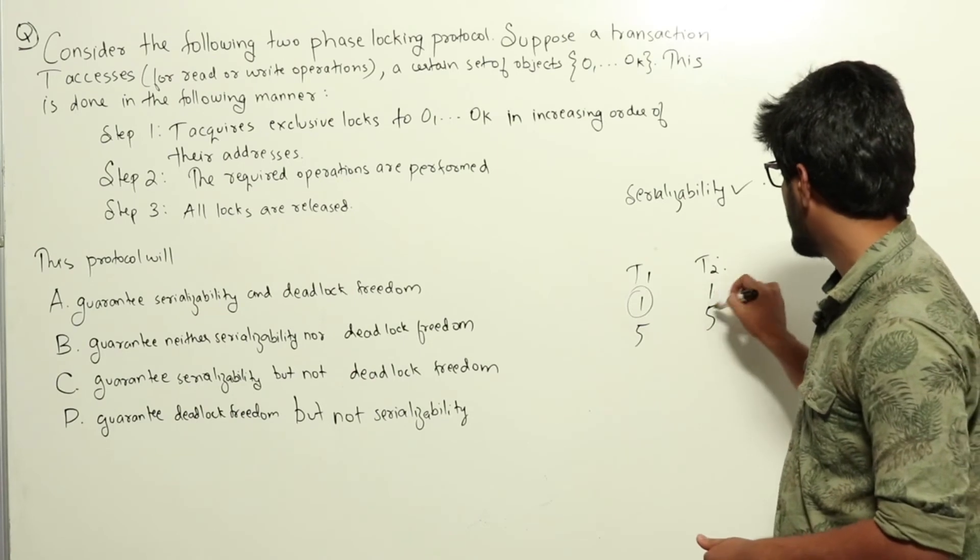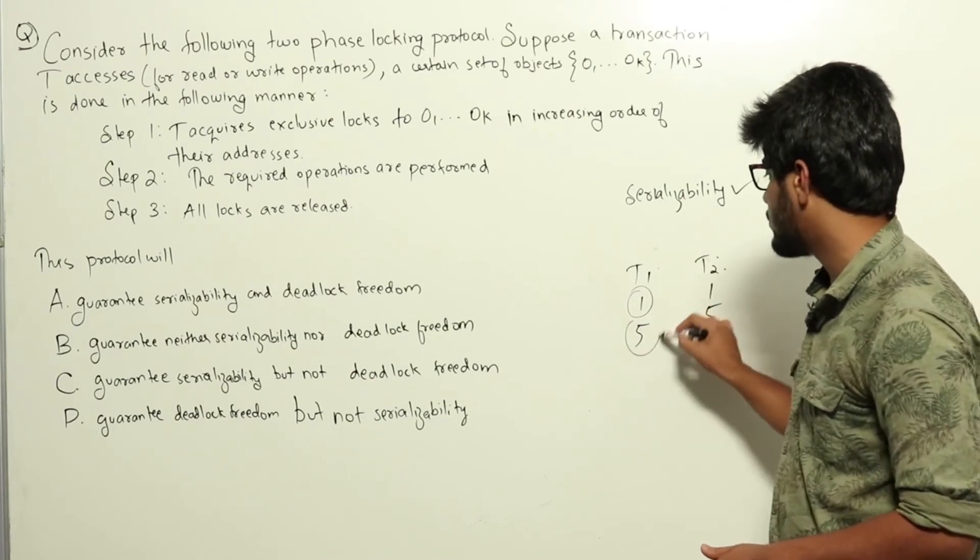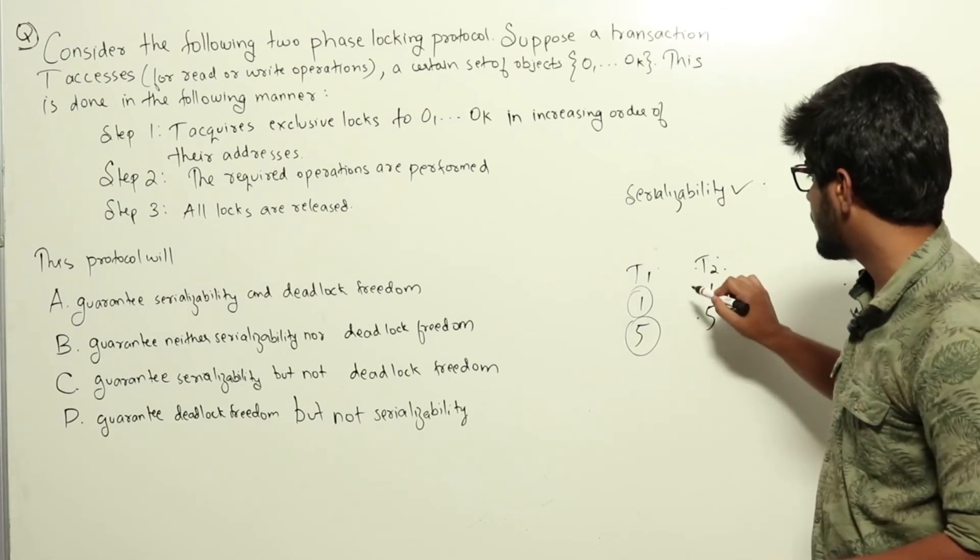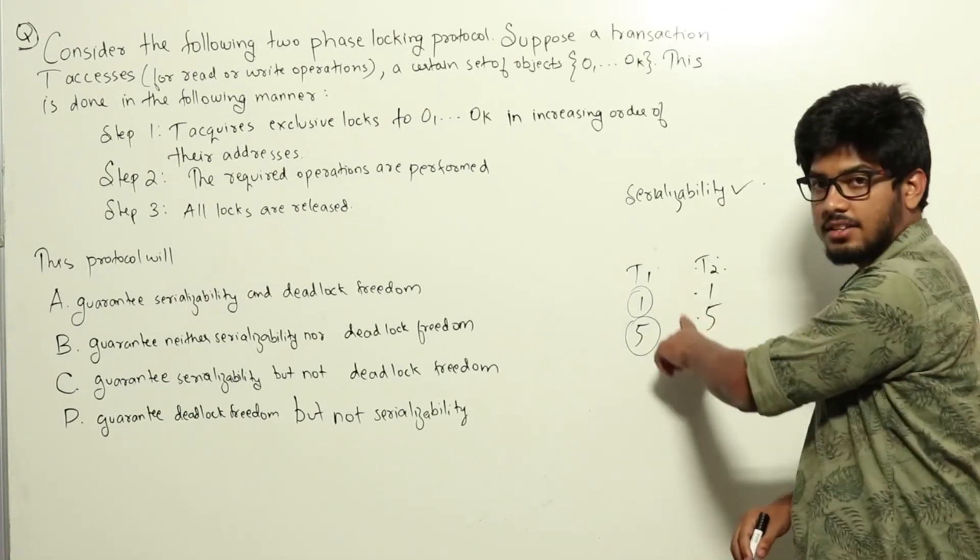Now, T2 will never get the lock to object 1, and T1 can easily get the lock to object 5. T2 will never get the lock to object 5 because it hasn't got the lock to object 1, and it can only access in the increasing order.